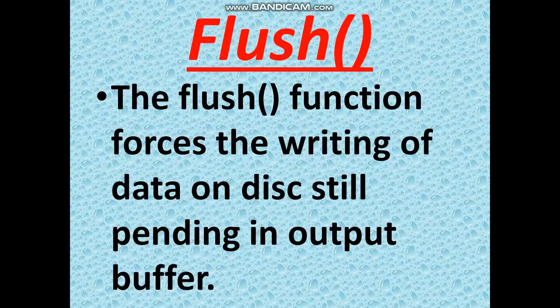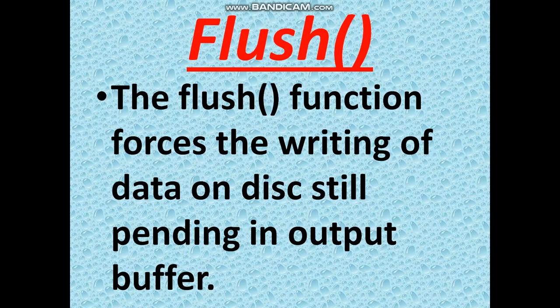Next is the flush function. When we write data and then close the file using the file handle, the flush function ensures that whatever is in the buffer is directly stored in memory without waiting for the close function. Sometimes data may get corrupted by the close function, so the flush function automatically sends the data to disk before that can happen. It forces writing of data pending in the output buffer directly to the disk or storage device.